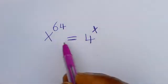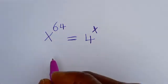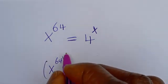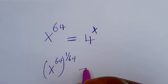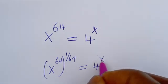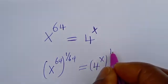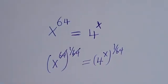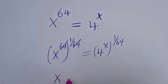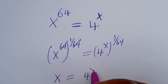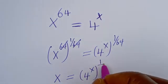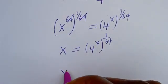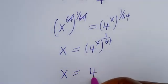Let's multiply the exponent of both sides by 1 over 64. That is, s to the power of 64, raised to the power of 1 over 64, is equal to 4 to the power of s, raised to the power of 1 over 64. This will cancel, giving us s is equal to 4 to the power of s over 64.